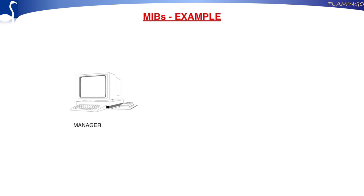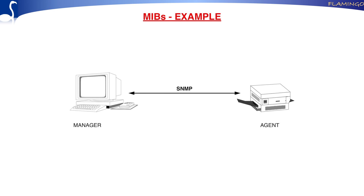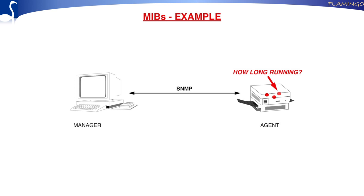As shown in the example, at the left we have the manager, at the right we have a printer. Within that printer you have variables that indicate certain things about how the printer operates — for instance, how much paper is still available, what the IP address is of the printer, and how long it's already running. These variables are logically organized within what we call the management information base.